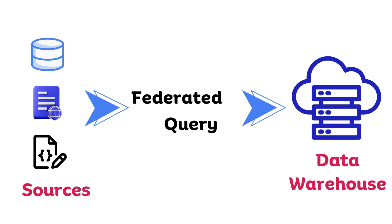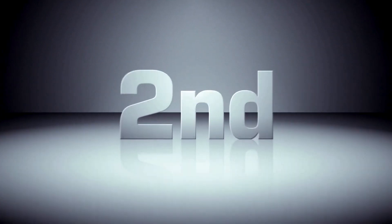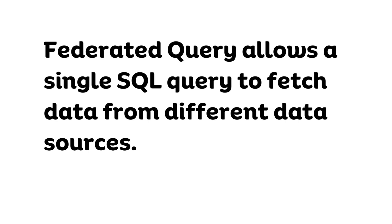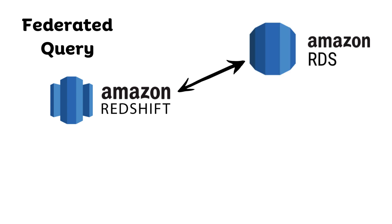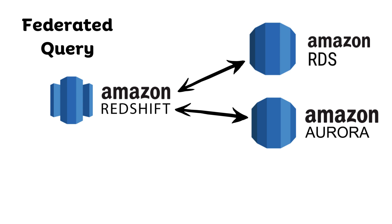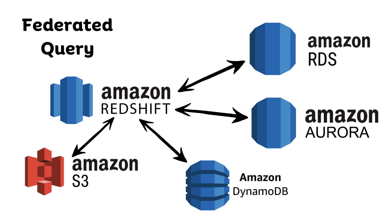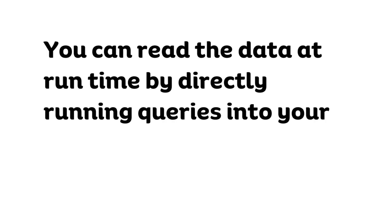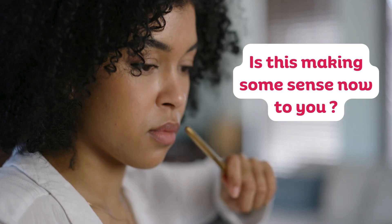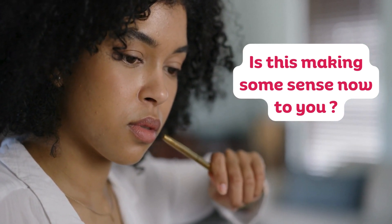This brings me to the second concept of this video: federated query. Federated query allows a single SQL query to fetch data from different data sources. For example, with a Redshift data warehouse, you can run a SQL query that fetches information from various data source services — it is possible to fetch data from Amazon RDS, Amazon Aurora, Amazon DynamoDB, and Amazon S3, all from a single SQL query. You don't have to create ETL pipelines to fetch data from these services into staging tables; you can read the data at runtime by directly running queries into your source system.